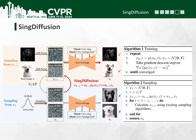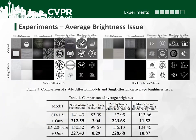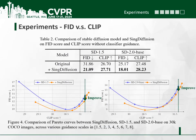We use prompts like black background and white background to prove that our method can resolve the average brightness issue. Since our method is designed for tackling singularities, it can also improve image quality. We choose 30,000 prompts from the COCO dataset and calculate the FID and CLIP score without classifier guidance. Our method clearly improves the CLIP score and decreases the FID score, and achieves a lower FID score for the same CLIP score on the Pareto curves under different guidance scales.